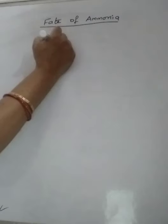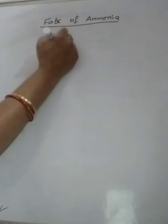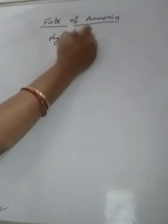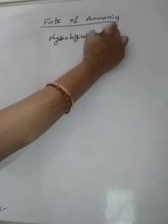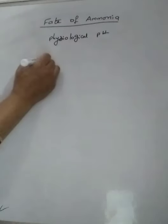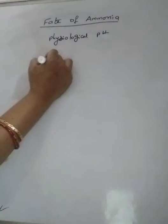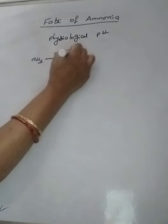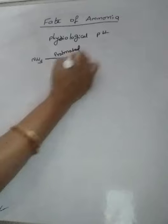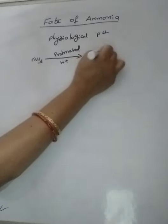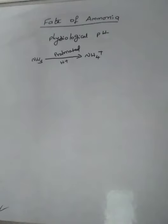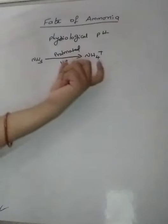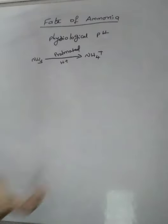At physiological pH, this ammonia will be protonated. Protonated means the H+ ion will be added, and it will become ammonium, which is harmful to organisms — plants as well as other things. These ammonium ions are toxic to the plants.